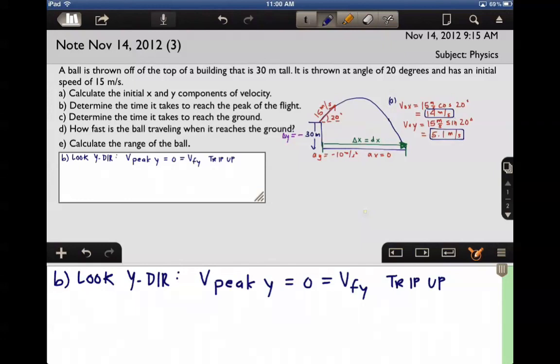Now that I know this information—that the final V_y is 0 for the trip up, the initial V_y we found in part a is 5.1, and it is always the case a_y is negative 10 meters per second squared—I can find the time.